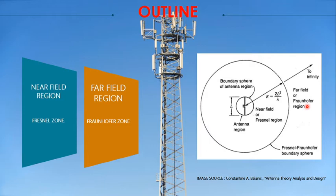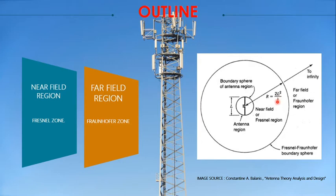Only in the far field or Fraunhofer region does the actual radiation of the antenna begin. In the near field region we cannot observe the radiations properly — the shape of radiation is somewhat random. Only after the radiation crosses the boundary between the near field and the far field region can we observe the radiations of an antenna as required. Any distance within 2L² by λ is the near field or Fresnel region, and if the distance crosses 2L² by λ that is the far field or Fraunhofer region.